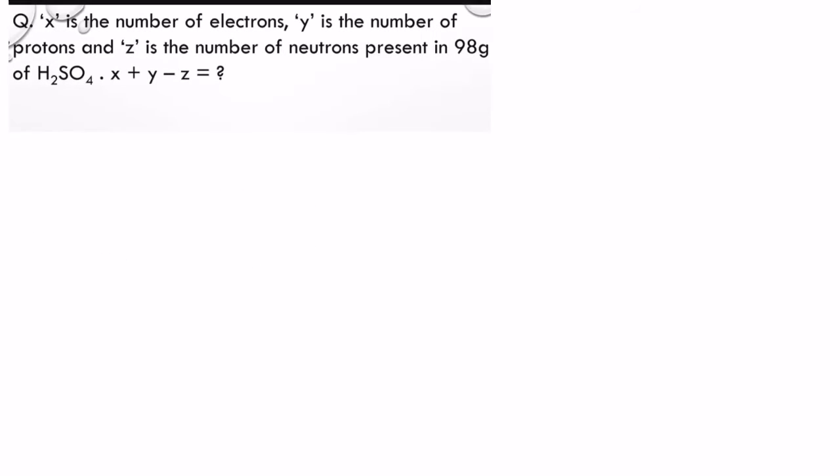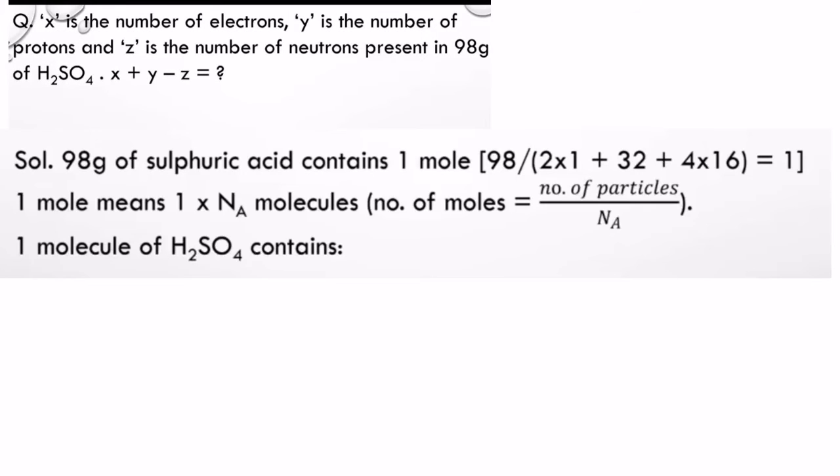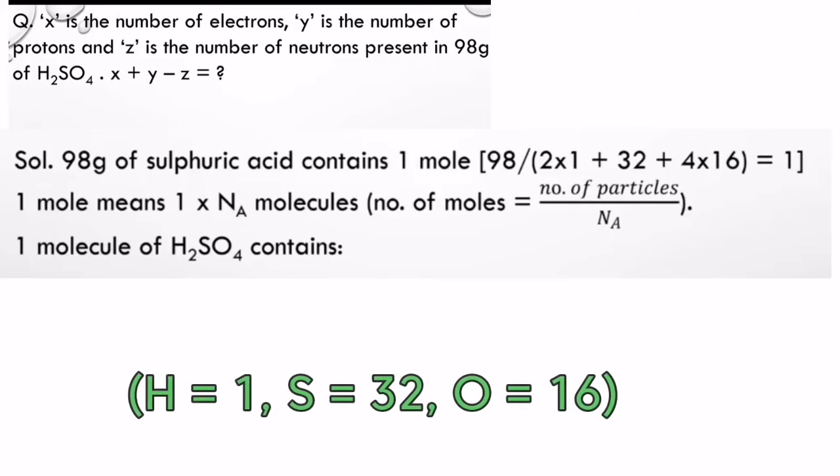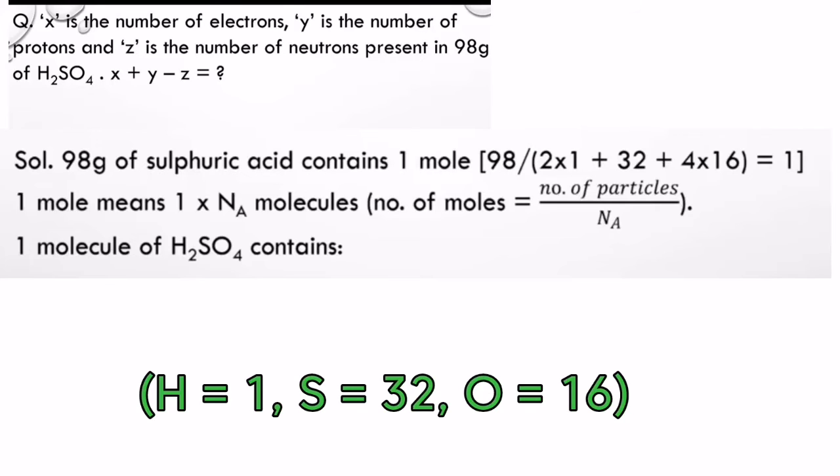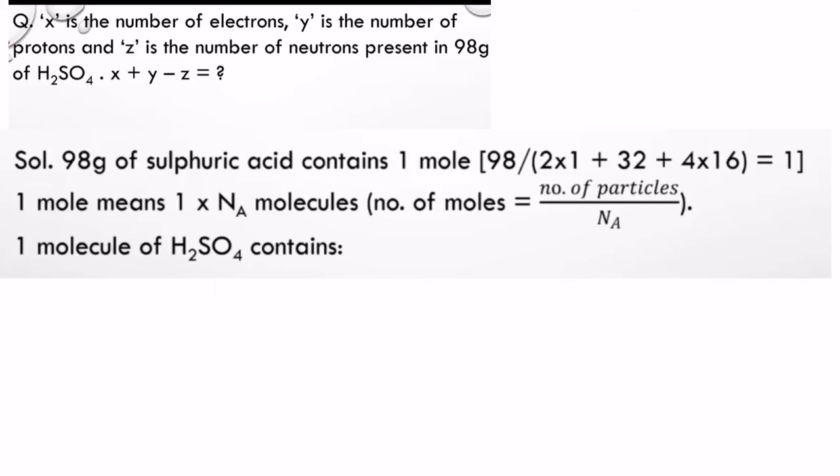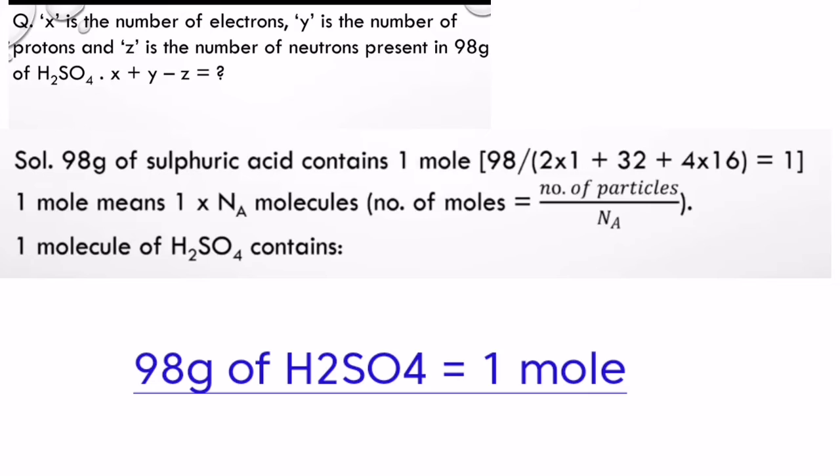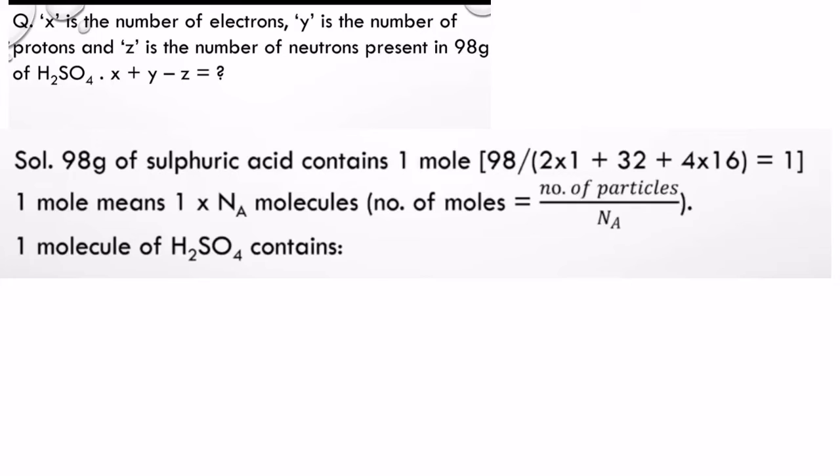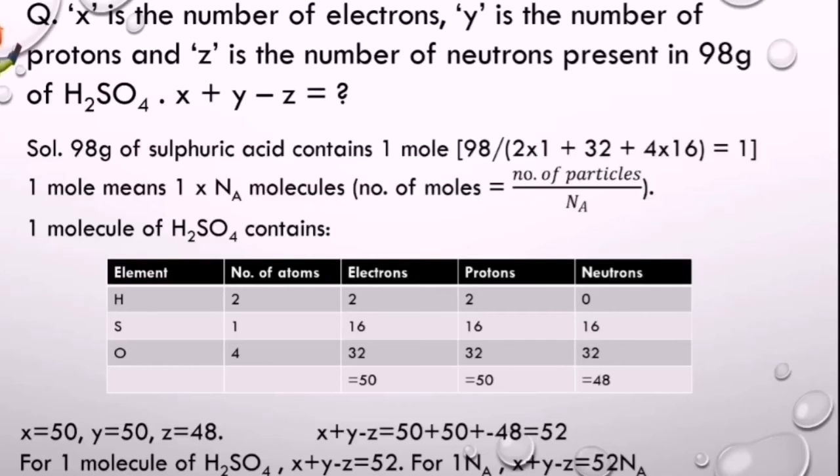98 grams of sulfuric acid means nothing but one mole. How? Just calculate the molecular weight of H₂SO₄ by adding the individual gram atomic mass of the elements and you get 98. 98 divided by 98 is one. So you have one mole of sulfuric acid. As stated earlier, one mole of something has NA molecules, so here we have NA molecules of sulfuric acid.